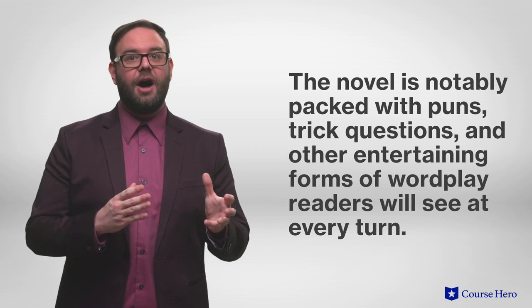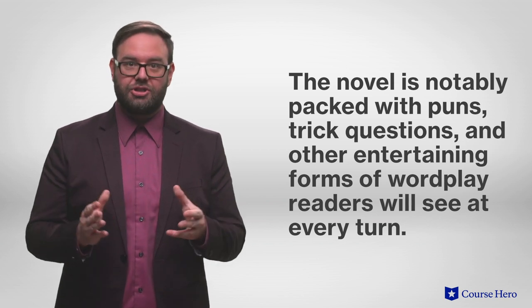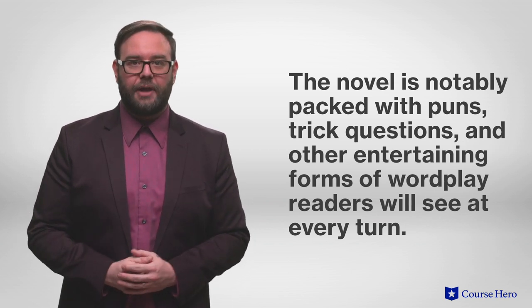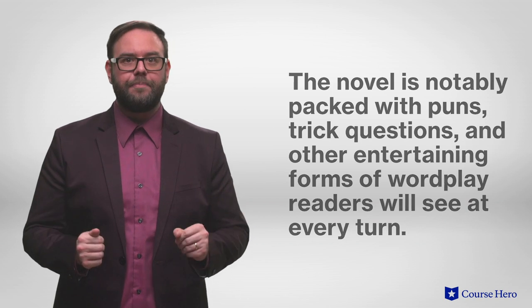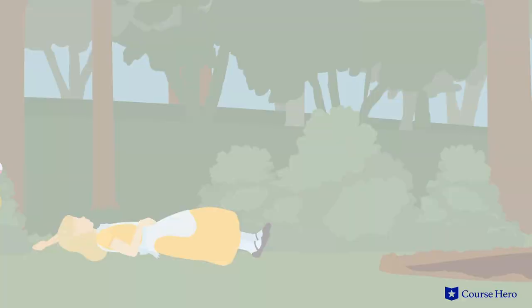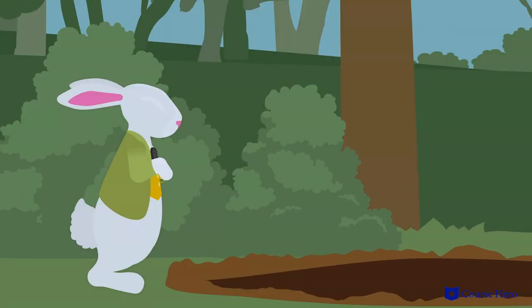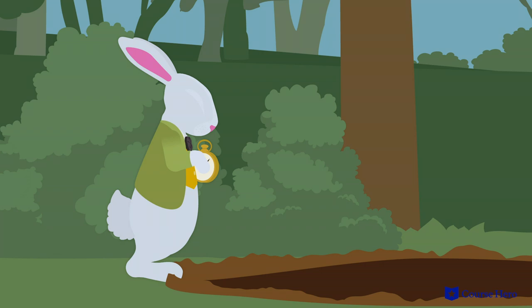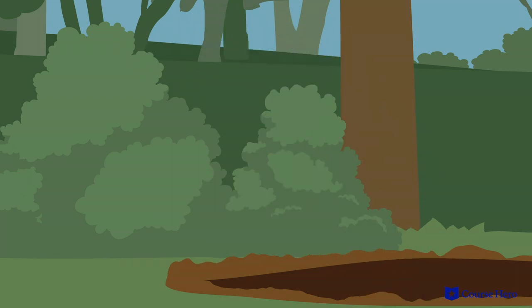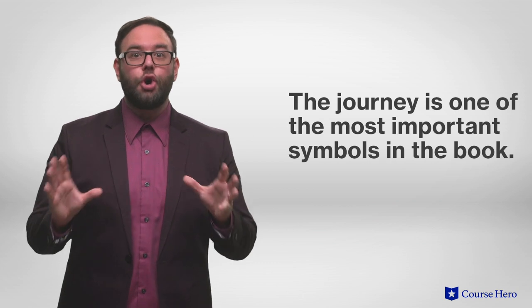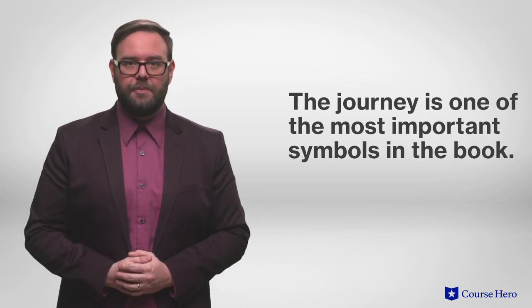The novel is notably packed with puns, trick questions, and other entertaining forms of wordplay readers will see at every turn. On a May afternoon, seven-year-old protagonist Alice is dozing on a sunny riverbank. Suddenly, a big white rabbit carrying a pocket watch rushes by. Alice impetuously follows him down a rabbit hole that turns into a long tunnel. Unsurprisingly, the journey is one of the most important symbols in the book.